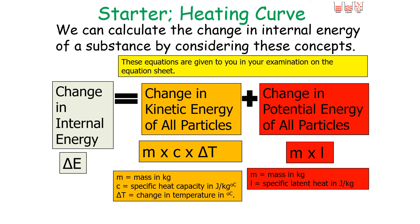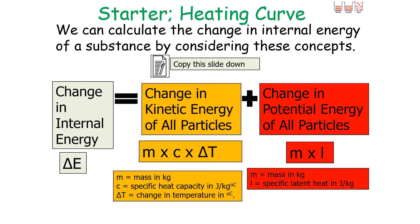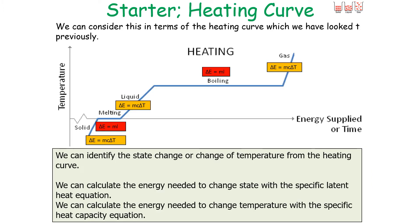These equations are given to you in your examination on the equation sheet, but if you're sitting a higher tier examination you are likely to be asked to rearrange them. To summarise: when working out a change of state, use E = mL; when working out a change of temperature, use E = mcΔT.